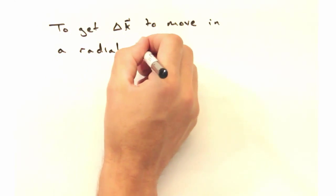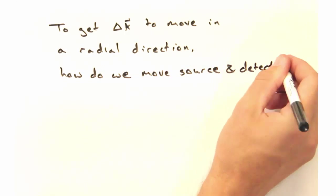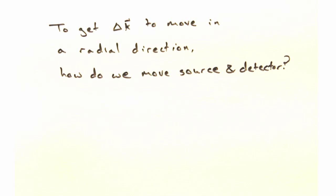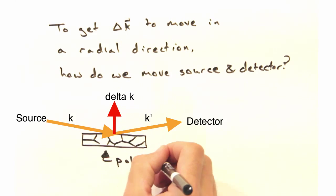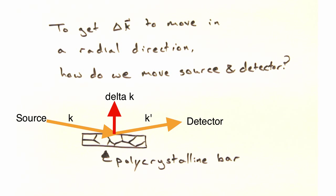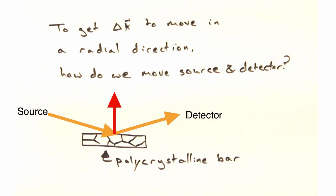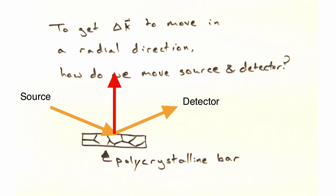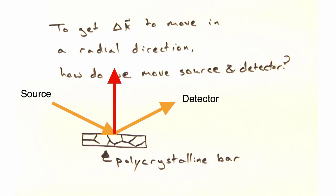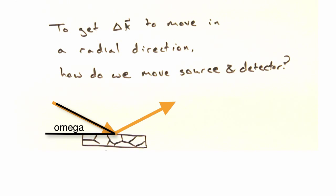So to get delta k to move in the radial direction, how do you think we want to move our source and detector? Well, let's look at a k and k' configuration like so, where the delta k vector is perpendicular to the sample plane. Then if we move the source and detector together, the new delta k should look like so. This gives us the radial growth we were looking for. Absolutely. And we usually define our k vector at this angle, omega, with respect to the sample plane, and k' is defined in terms of this 2-theta angle, so that when the source and detector move, you change omega and 2-theta. Which is why we call this technique an omega-2-theta scan.